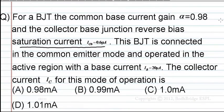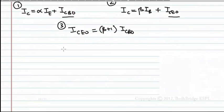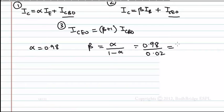First thing given: alpha is equal to 0.98. What is beta equal to? Alpha divided by 1 minus alpha: 0.98 divided by 0.02, which is equal to 49. Therefore, beta is 49. This is the first result we got.